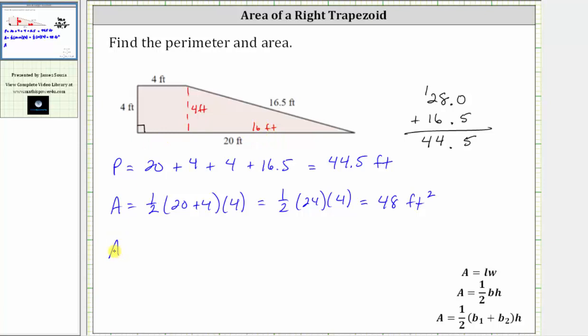Let's just make sure we get the same area when we decompose the area. So a second method to find the area, the area is equal to the area of the square plus the area of the triangle. The area of the square is four feet times four feet, and then we have plus the area of a triangle, which is one half base times height, which in our case would be one half times 16 feet times four feet.